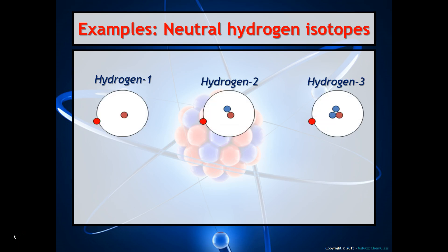Here are Bohr models that represent all of the hydrogen atoms. Take a minute to figure out which particles are the electrons, which are the protons, and which are the neutrons. The red dot outside represents the electrons, the red dot inside the nucleus represents the protons — and notice the protons are the same for each model. The blue dots are the neutrons, because protons won't ever change, but neutrons can. That's what isotopes are.